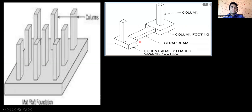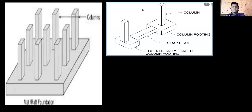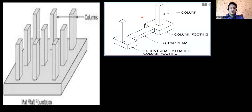After that, we have the mat foundation — mat foundation and raft foundation are both one and the same. In a mat foundation, you have multiple columns, but there is one single base that is one foundation. It is called as mat or raft foundation.